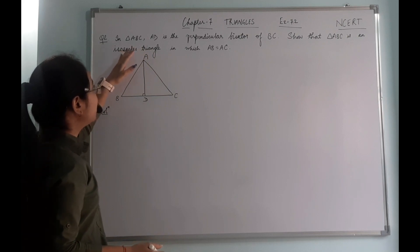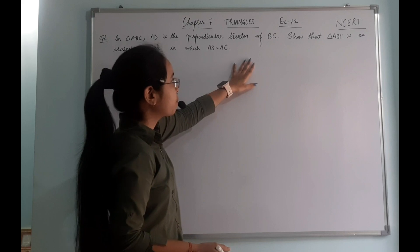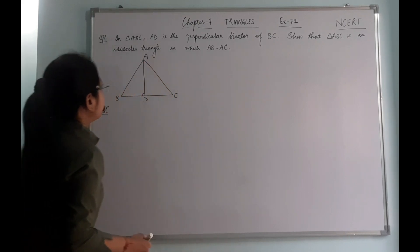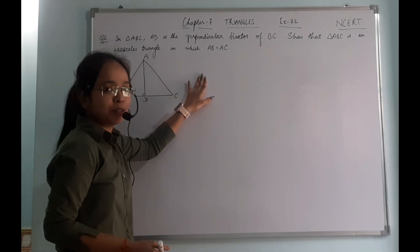Question number 2. In triangle ABC, AD is the perpendicular bisector of BC. Show that triangle ABC is an isosceles triangle in which AB equals AC.